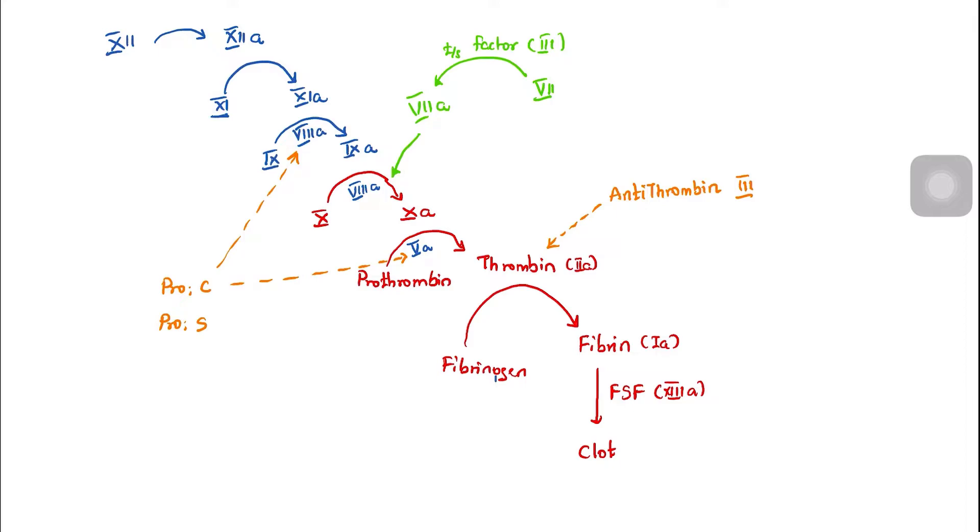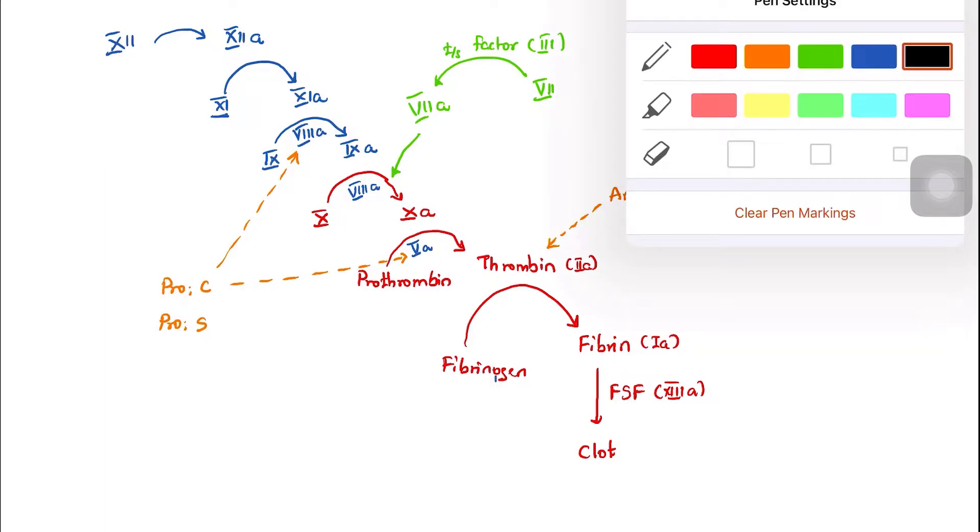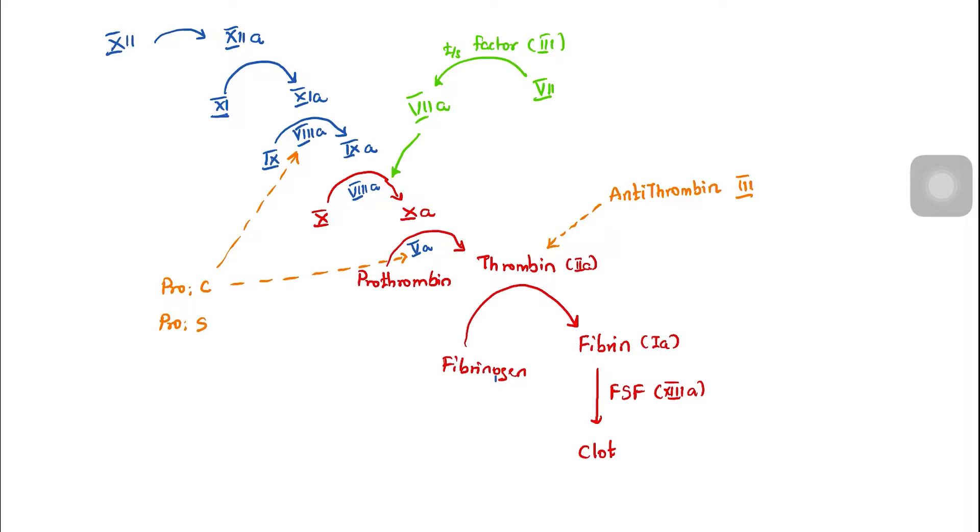Heparin, warfarin, and other anticoagulants help prevent this. Heparin acts on antithrombin and prevents thrombin accumulation. Warfarin inhibits vitamin K-dependent clotting factors in patients, preventing the clotting factors and black clot formation.